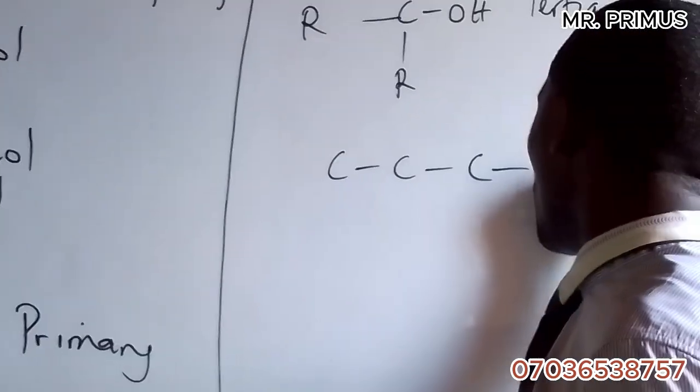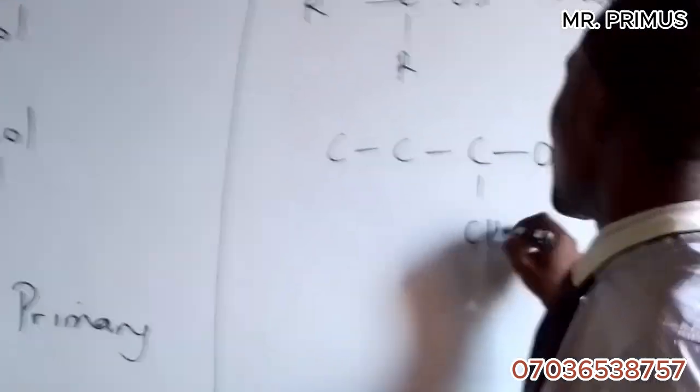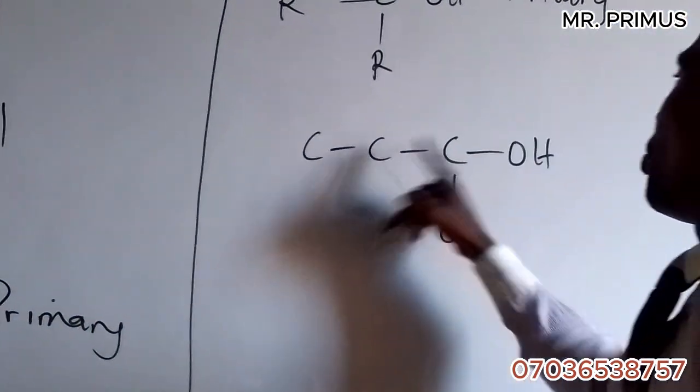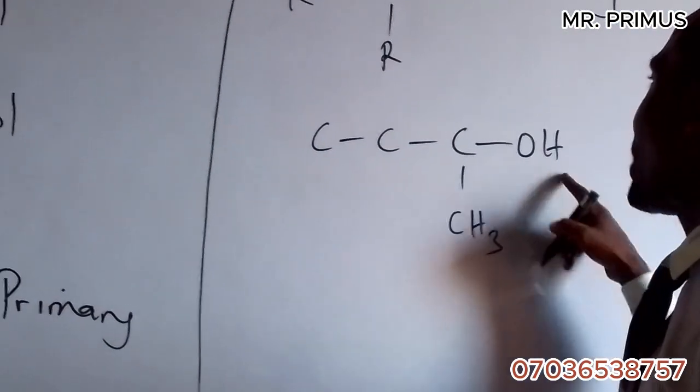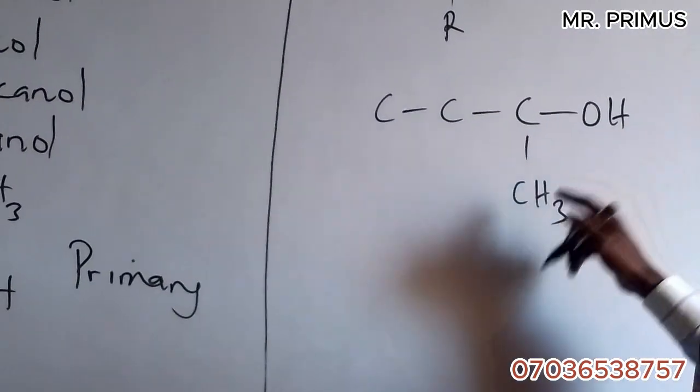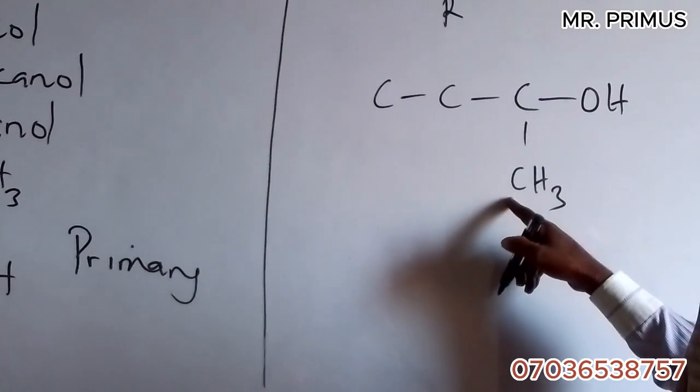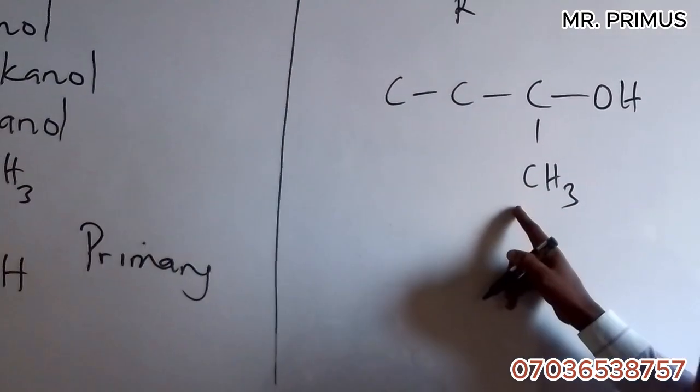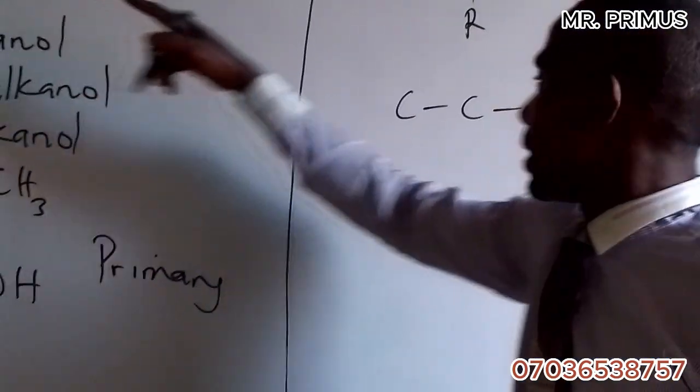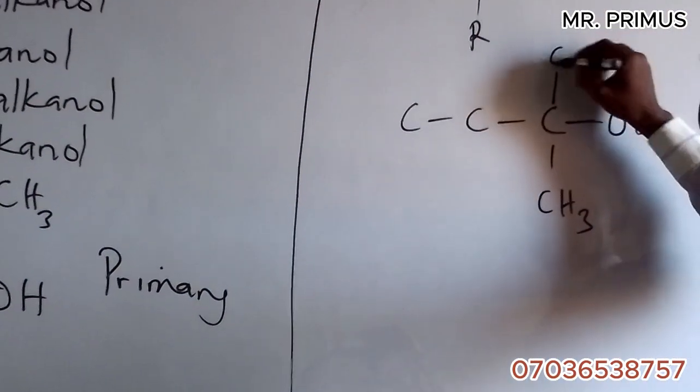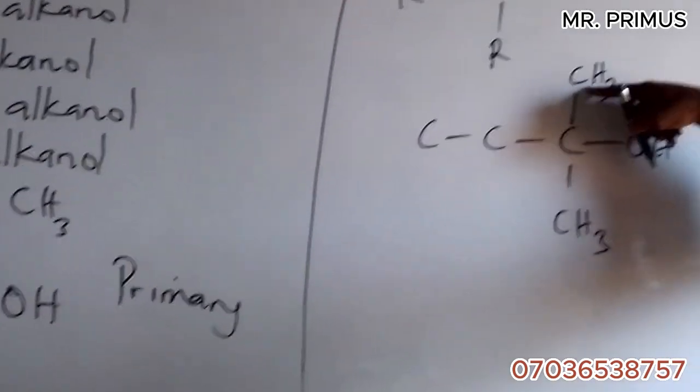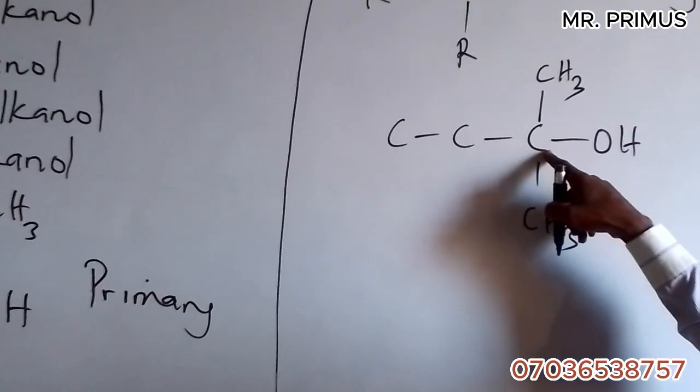Because this is -ol, we put CH3 here for butanol. We start numbering from here as I taught you. One, two. 2-methyl means we put the methyl here, CH3. One, two - methyl butan-2-ol.